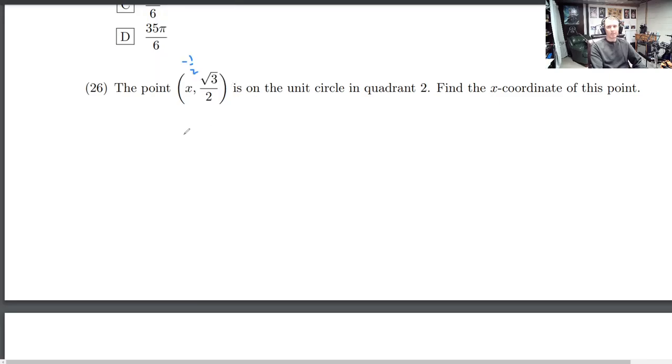What do we know about points on a unit circle? We know that if you take the x-coordinate and the y-coordinate, you square them, you add them together, you get 1 every time.